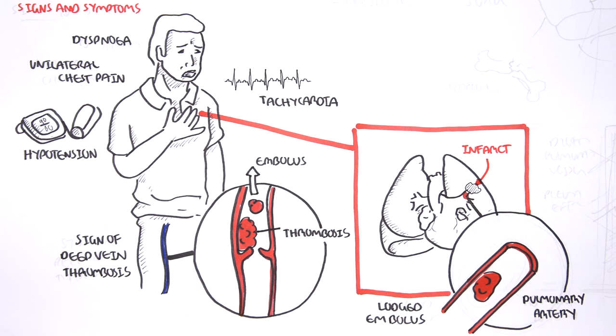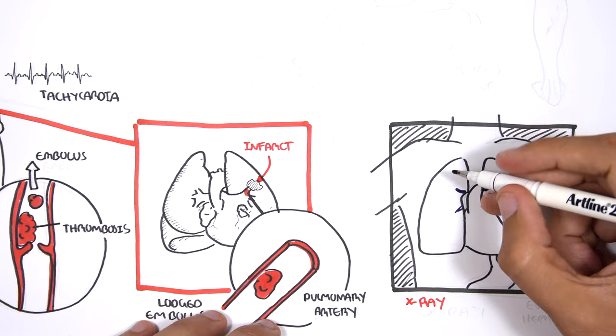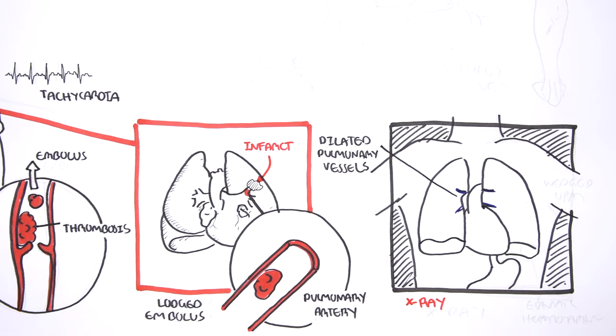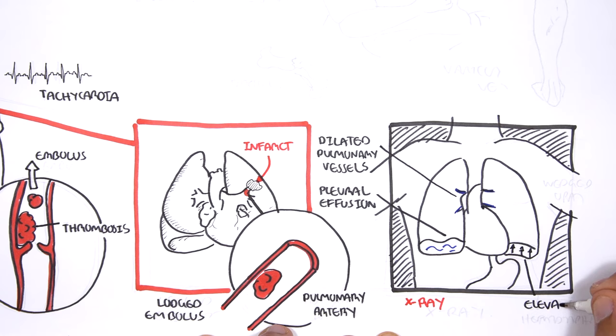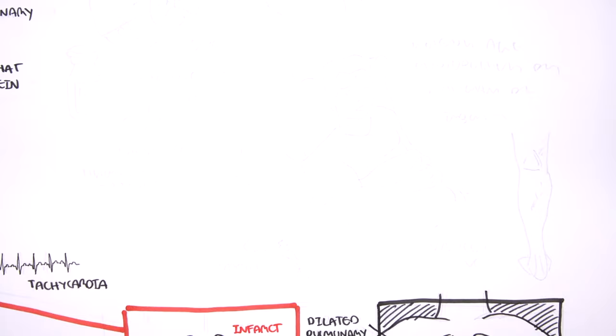If we were to take an x-ray of a person who has pulmonary embolism, here are some features we could see. One, dilated pulmonary vessels. Two, there may be presence of fluid or pleural effusion. Three, an elevated hemidiaphragm. And finally, a wedged opacity due to the infarct that resulted from the pulmonary embolism.